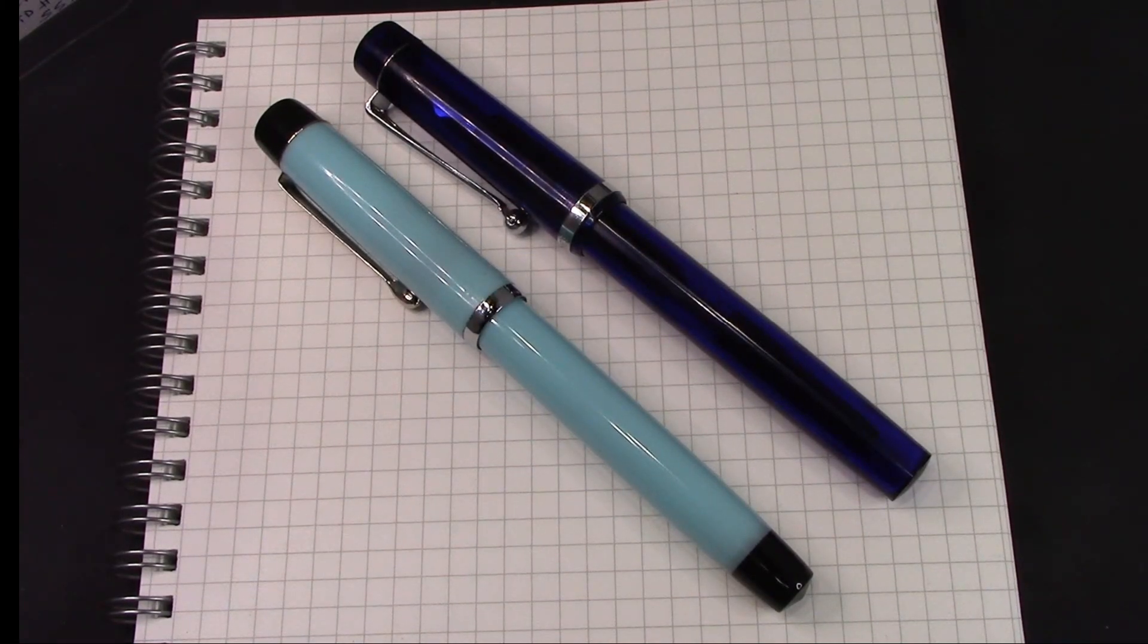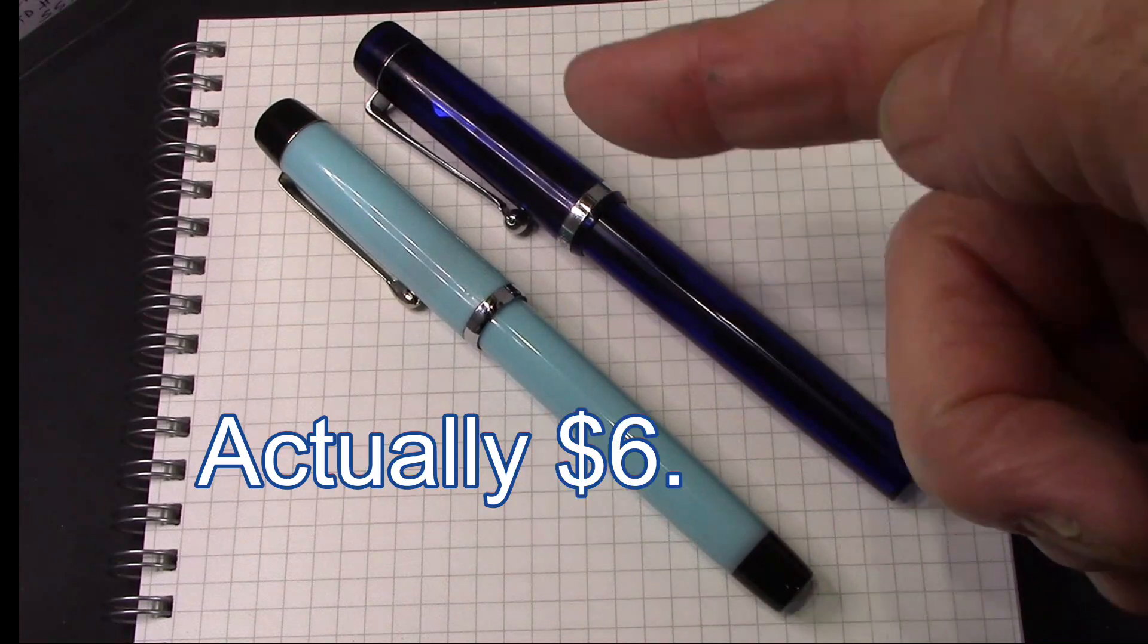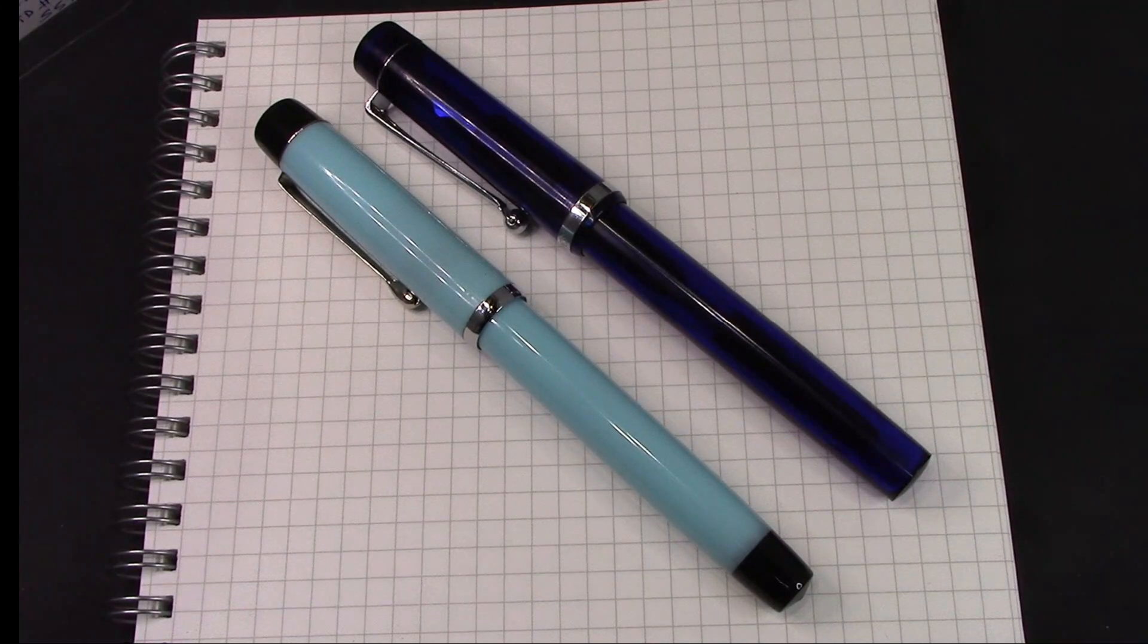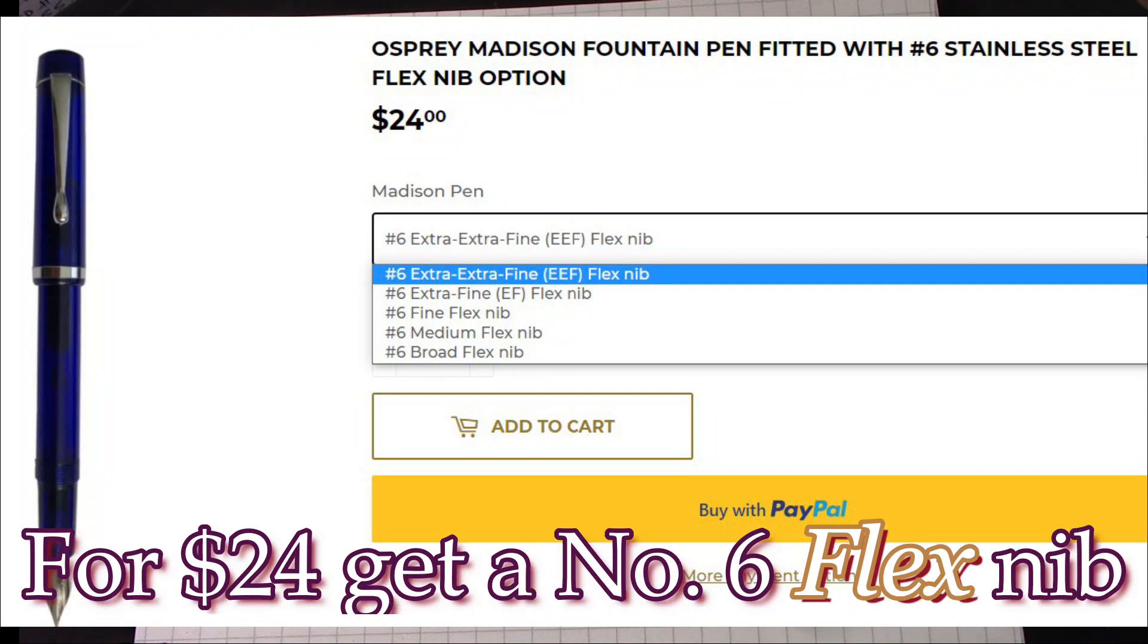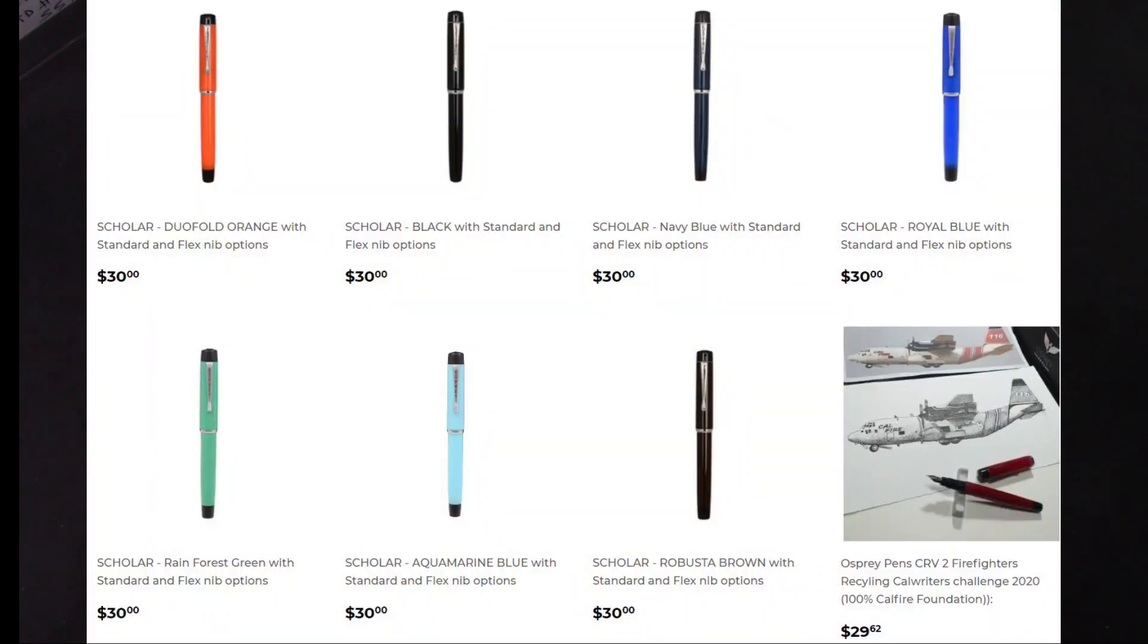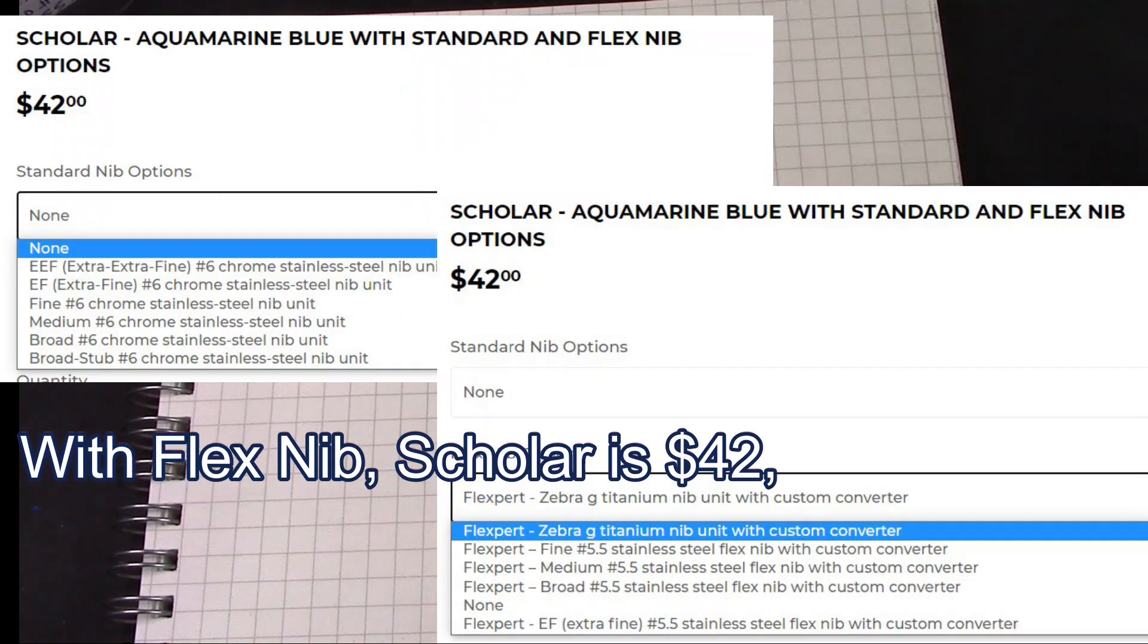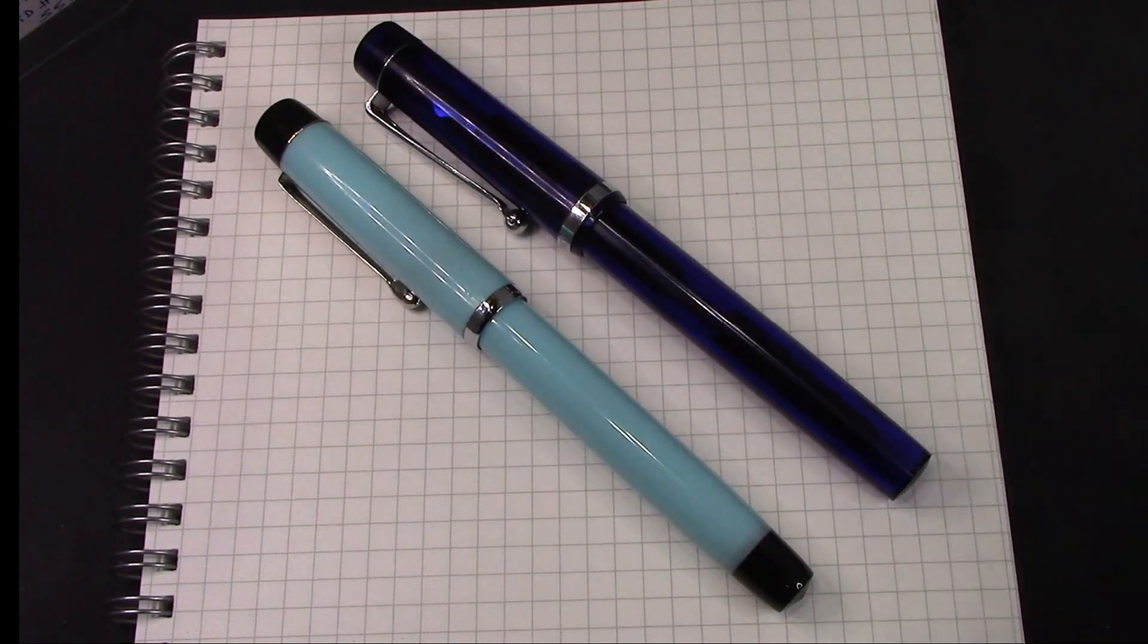So an obvious comparison would be between the Osprey Scholar and the Osprey Madison. The Madison costs you $5 less for the pen. The real differences in my perspective is, number one, the Madison comes in one color, one choice, and it has limited selections in nibs. Or the Scholar comes in many colors. Here's an example. And also gives you the choice of one or two nibs, like the Milano did. So it's more of an upscale type of pen.